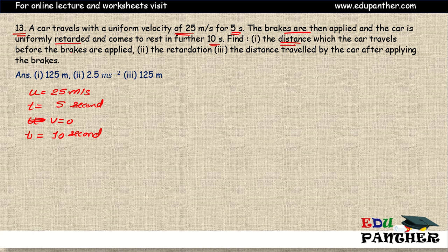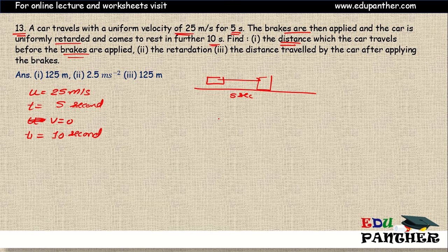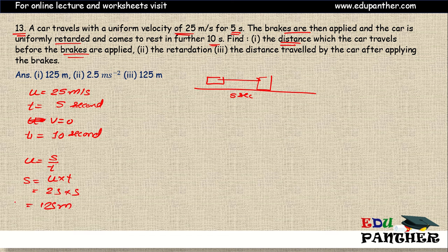Calculate the distance traveled before the brakes are applied. Initially the car was moving at constant velocity for 5 seconds. Using speed = distance / time, so distance = speed × time = 25 × 5 = 125 meters. So before braking, the car traveled 125 meters.